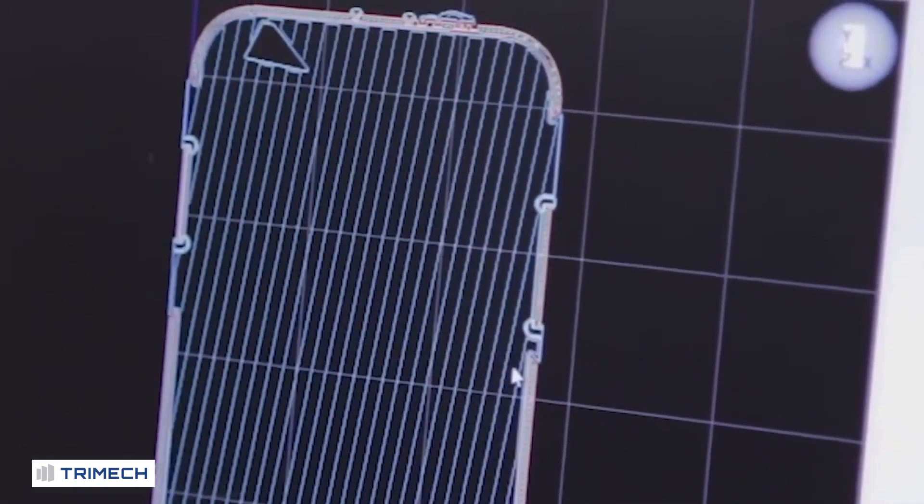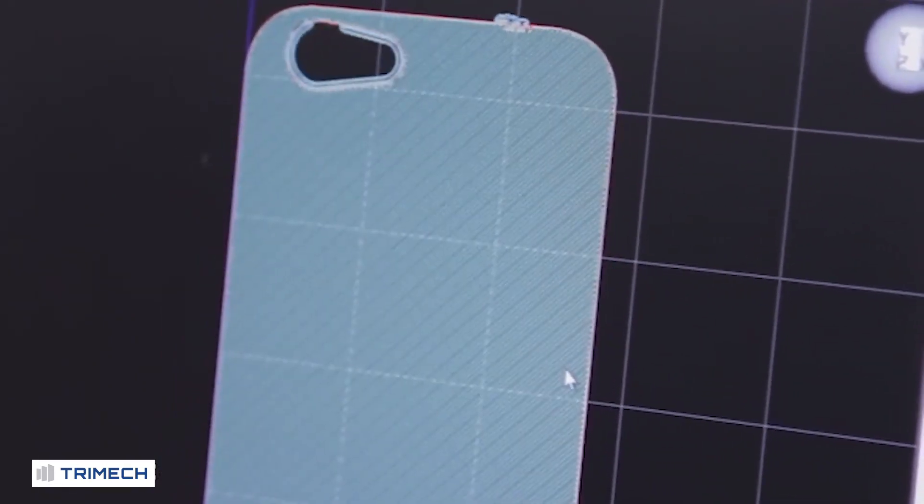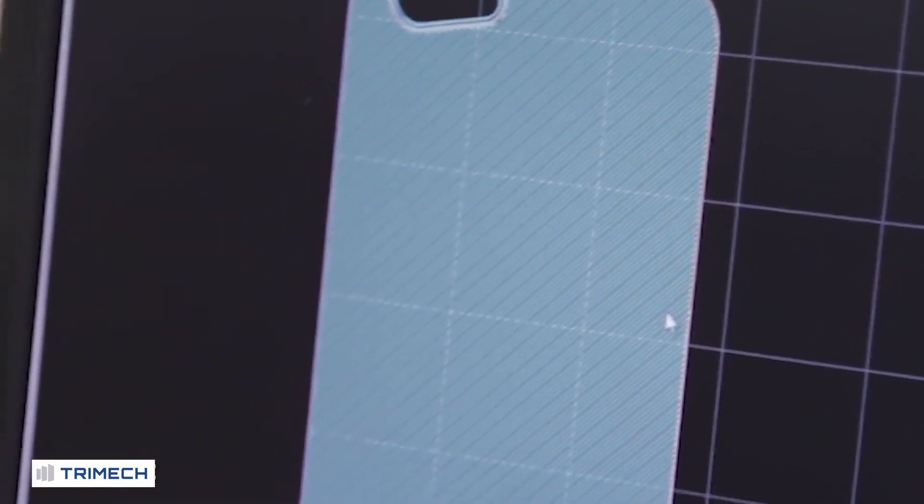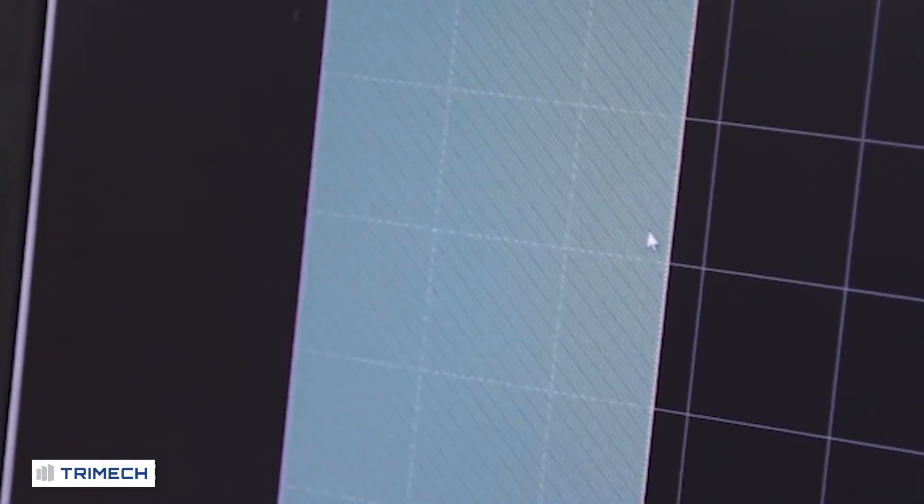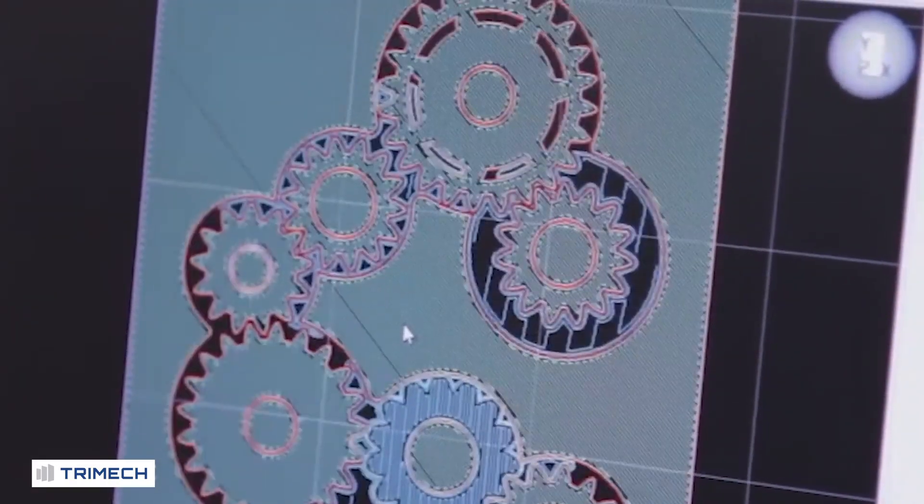So once we go here, we're going to take a top view. Anything that's color blue, that will be the support structure. Once we're getting that green look, that's the actual model. So I can go in layer by layer and see basically how it is going to print.